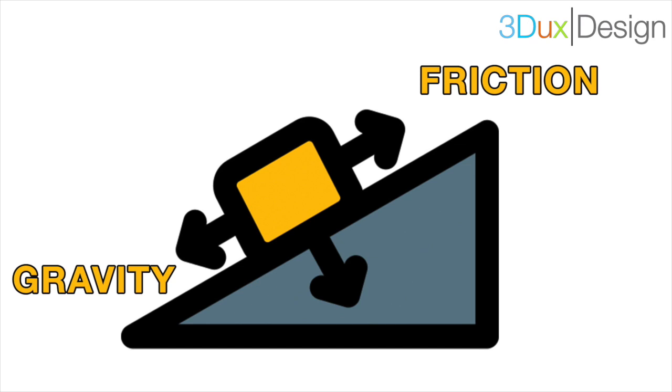So gravity pulls you down, but a rough surface with a lot of friction prevents you from sliding. So when you put something on a slope, like a hill, whether it slides down or not depends on which force, gravity or friction, is stronger.